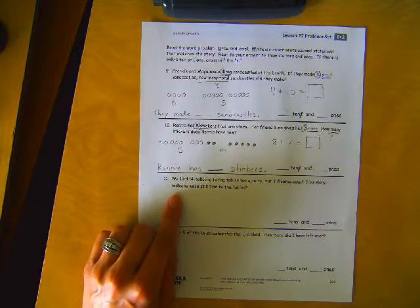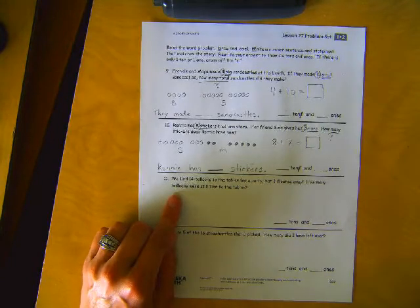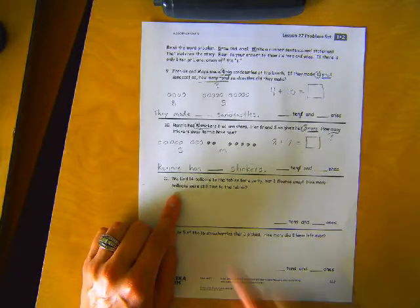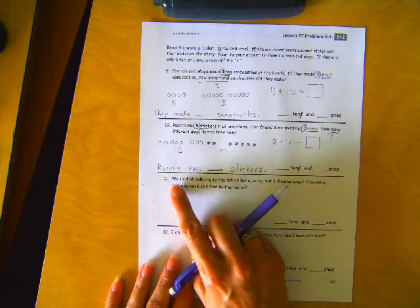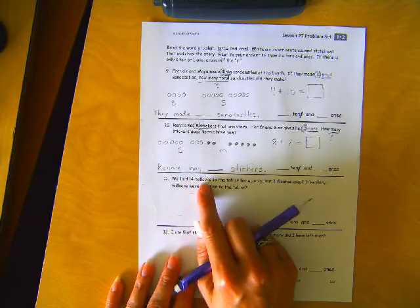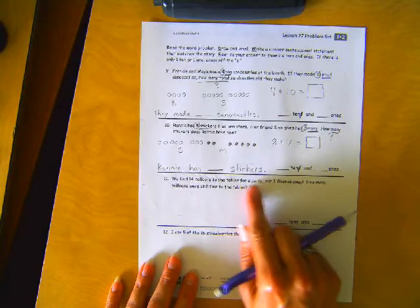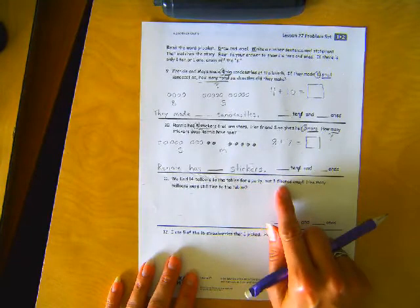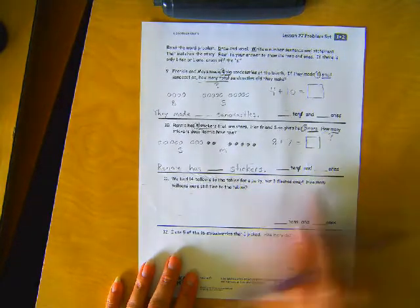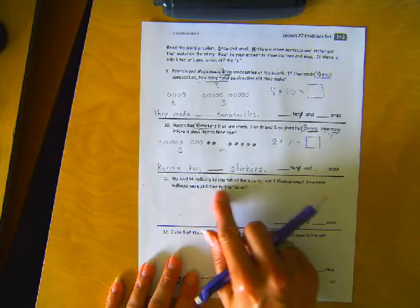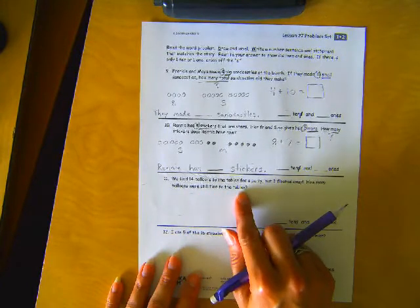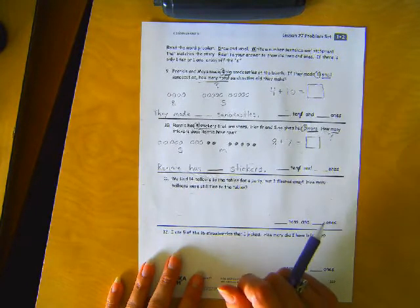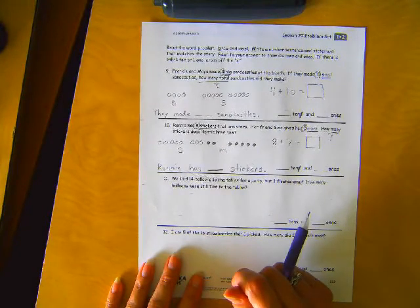Okay, I'm moving on to number eleven, so if you're not done with ten yet, you can pause it and finish. Here's number eleven. We tied fourteen balloons to the tables for a party, but three floated away. Okay. How many balloons were still tied to the tables? Uh-oh. If they floated away, do you think this is adding or subtracting?